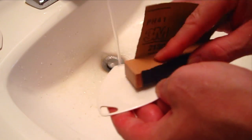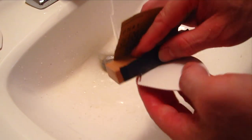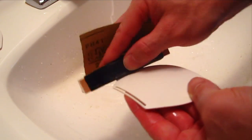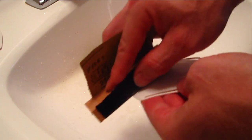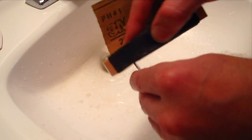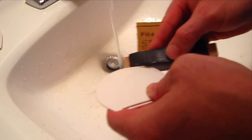So normally when I sand, I always wet sand. And the main reason is safety. There's no dust in the air. It all goes down the drain. I don't have to wear a mask and the sandpaper lasts about three times as long because the particles aren't clogging the sandpaper. So I just wet sand everything. For this video, I did both just to show you that you can dry sand, but I prefer the wet sand.